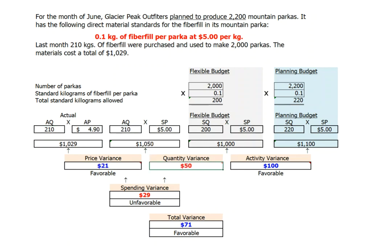Our quantity variance is $50, and it is unfavorable. Why? Because it should have taken us 200 kilograms to make 2,000 parkas, and it took us 210 kilograms to make our parkas. And that's that 10 kilograms difference multiplied by the $5 standard price.